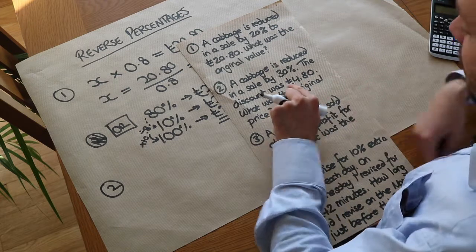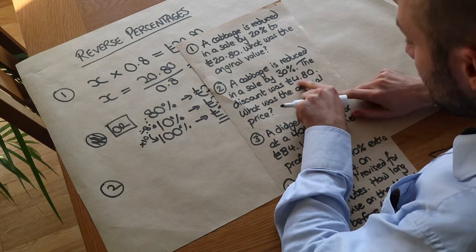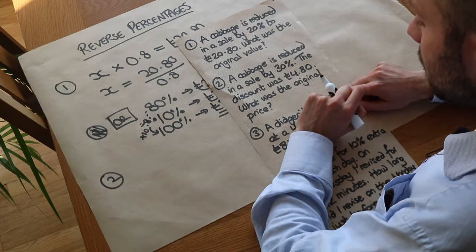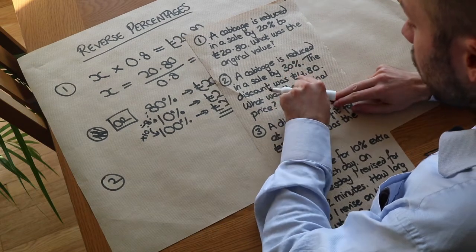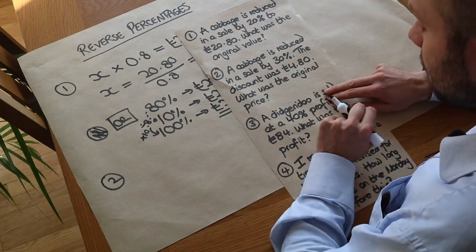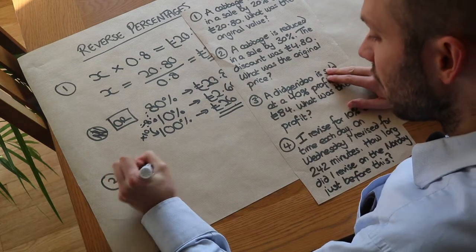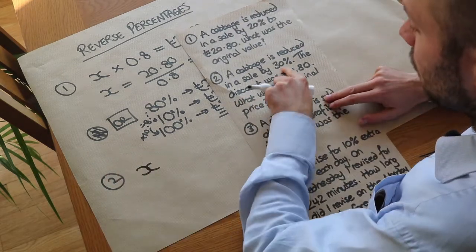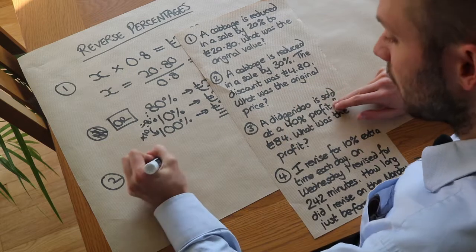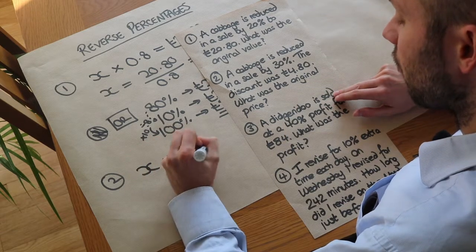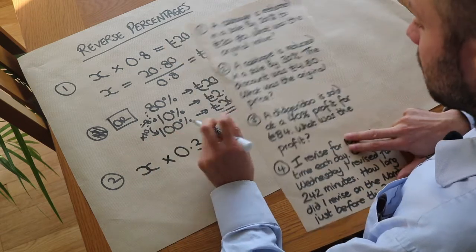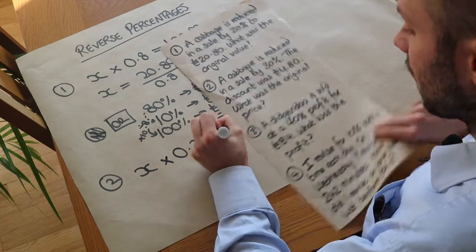Now the difference with this question is that they're telling us what the discount was. They're not telling us what the new value. So the 30% was the £4.80. So if we had the original value X, what would we do to find the discount of 30%? Well we'd times it by 0.3. And when we find 30% it gave us £4.80.